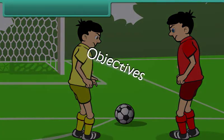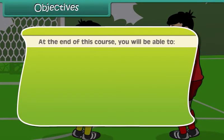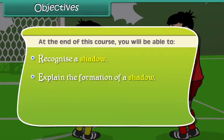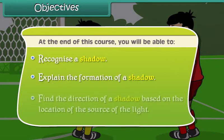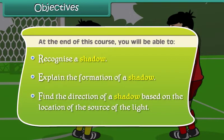Objectives. At the end of this course, you will be able to recognize a shadow, explain the formation of a shadow, and find the direction of a shadow based on the location of the source of light.